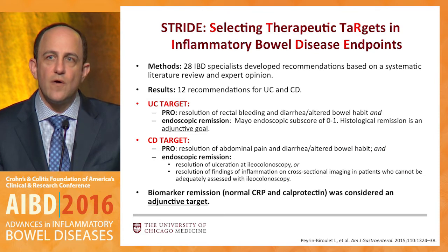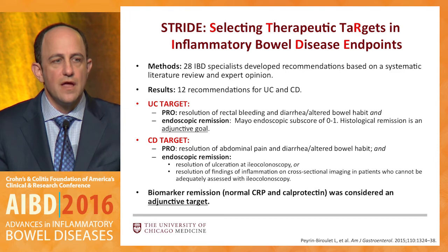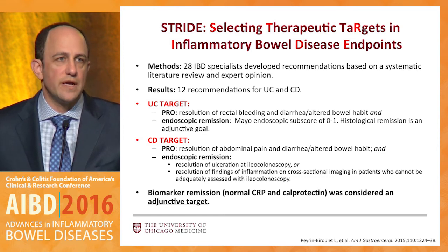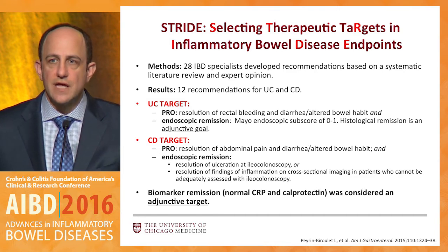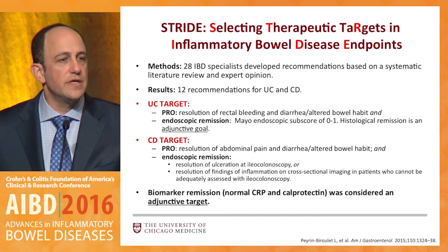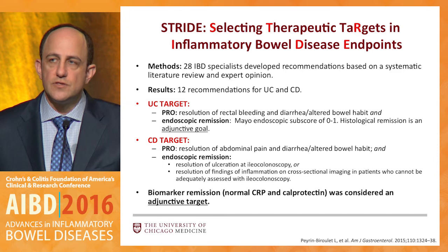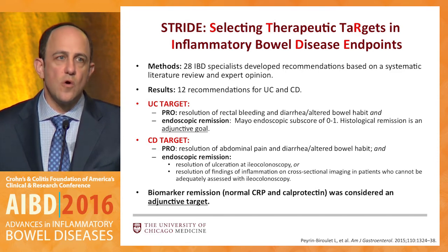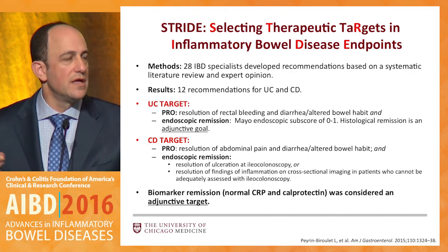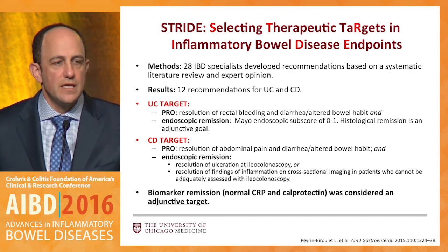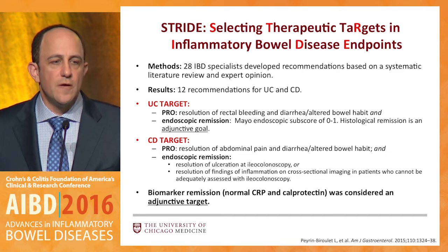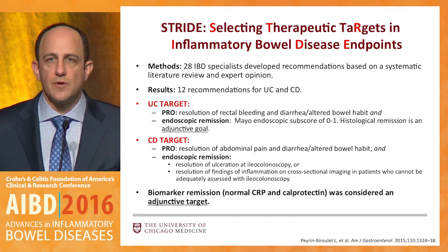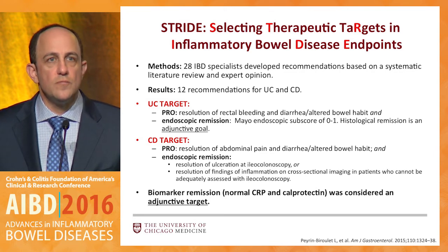You were introduced to the IOIBD initiative, which was essentially a consensus statement on what the targets might be for ulcerative colitis and Crohn's disease — targets that include patient-reported outcomes, essentially symptoms and improvements in quality of life measures, along with something objective like endoscopic improvement, or in the case of Crohn's, cross-sectional imaging improvement. At least in the consensus statement at the time the literature was reviewed, both CRP and calprotectin were considered adjunctive but not primary targets, so we have to think carefully about how we position those and in whom we might use them best.